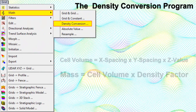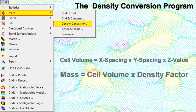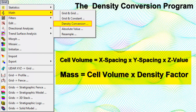The Density Conversion program multiplies the grid cell volume — defined as the cell width times the cell height times the Z value or thickness — by a constant representing density per unit volume to create a new mass grid. For example, if you have a grid model representing the thickness of a particular formation and want to determine its total mass, enter the density per volume unit of the rock type in question.